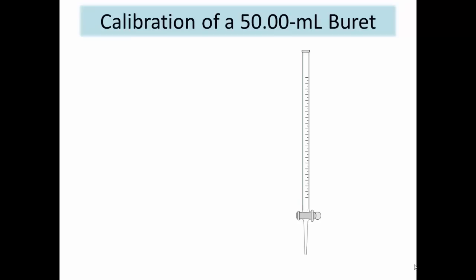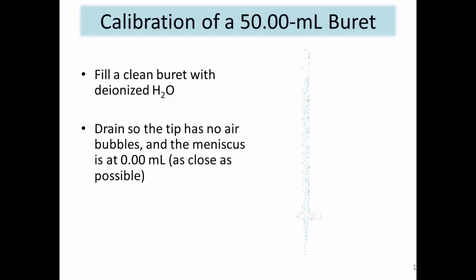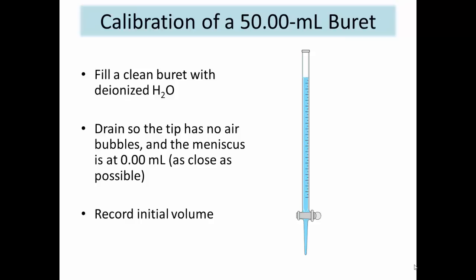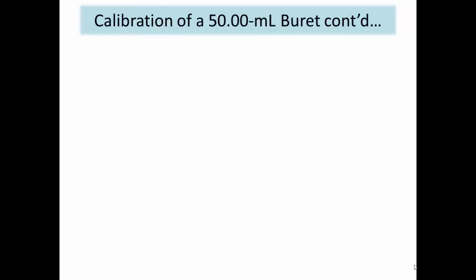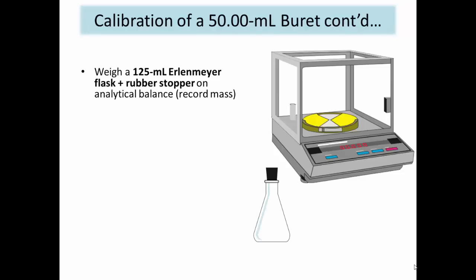Calibration of volumetric glassware, such as a pipette, is important because it gives an analyst an idea of how close the actual volume of solution it contains is to the volume indicated. For example, how close is the volume of a 25 ml pipette to exactly 25.00 ml? This depends on the temperature of your solution and the buoyancy force caused by the displacement of air by the water. To begin, fill a clean burette with water and make sure there are no air bubbles in the tip. Drain the burette until the meniscus is close to 0.00 ml and record the exact initial volume to two decimal places. On an analytical balance, weigh a 125 ml Erlenmeyer flask and rubber stopper, recording the mass to four decimal places. Handle the flask with a kimwipe instead of your hands to avoid contamination.